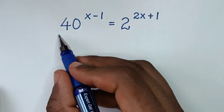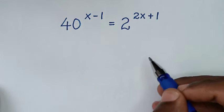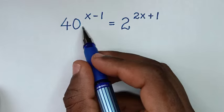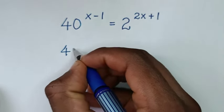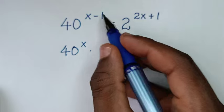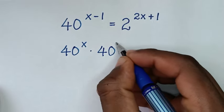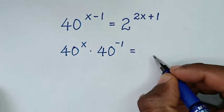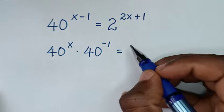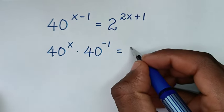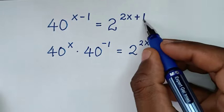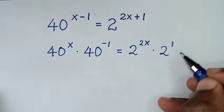To find the value of x from this equation: 40 power of x minus 1 is the same as 40 power of x times 40 power of negative 1. And 2 power of 2x plus 1 is the same as 2 power of 2x times 2 power of 1.